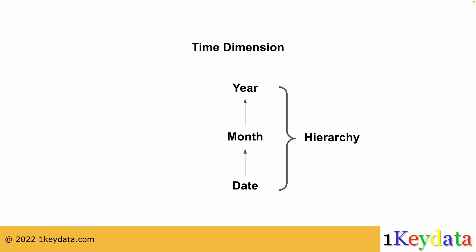It's common to see only a single hierarchy in a dimension. However, this doesn't have to be the case, as it is possible to have multiple hierarchies in a single dimension. For example, in the time dimension, we have the relationship from year to month to date, and this represents one hierarchy.